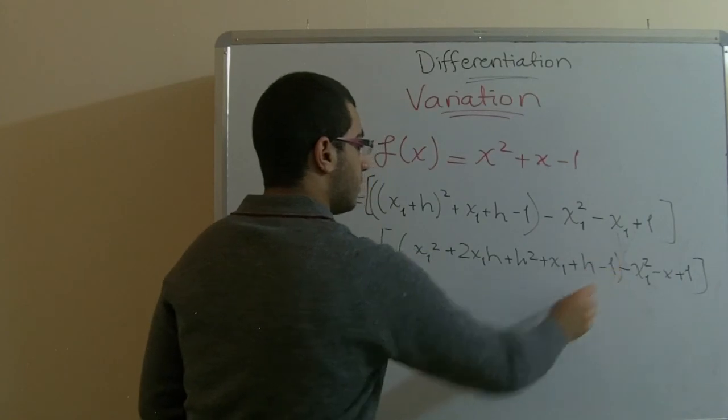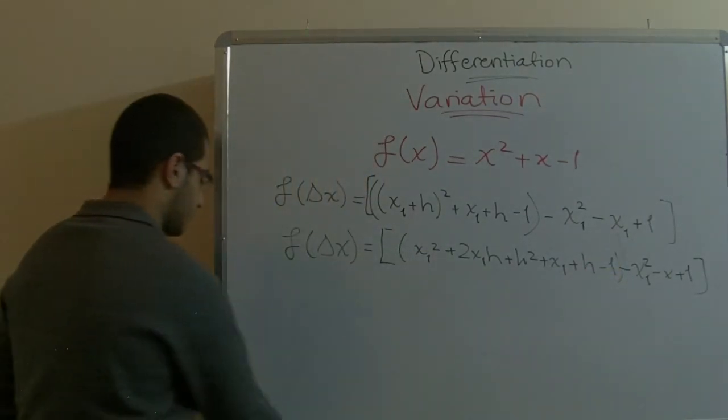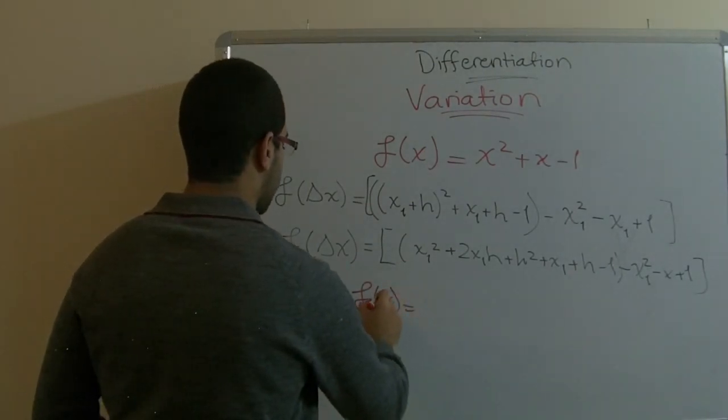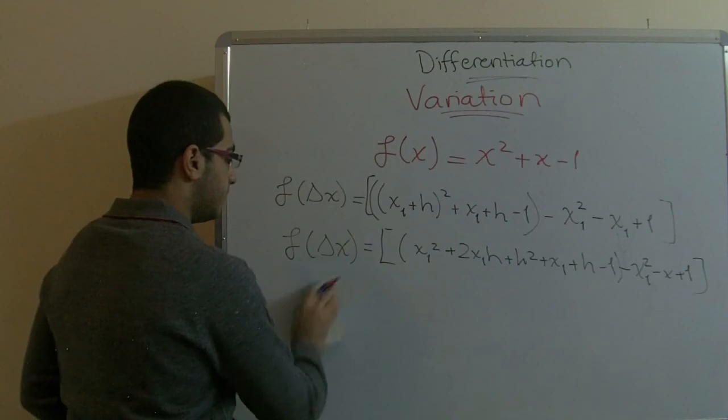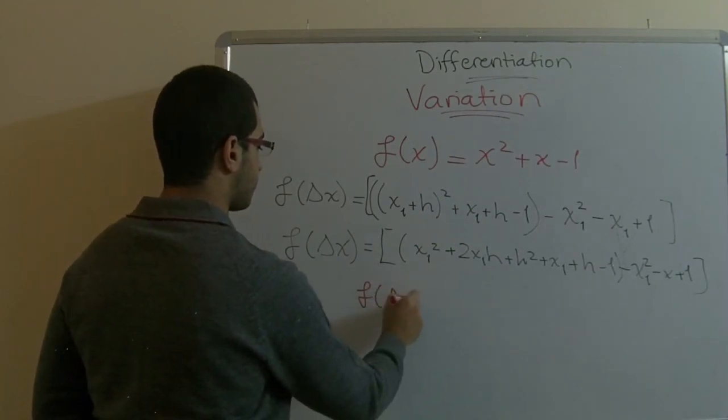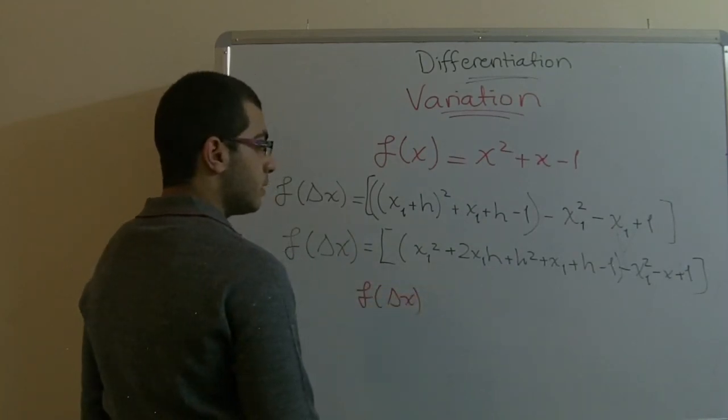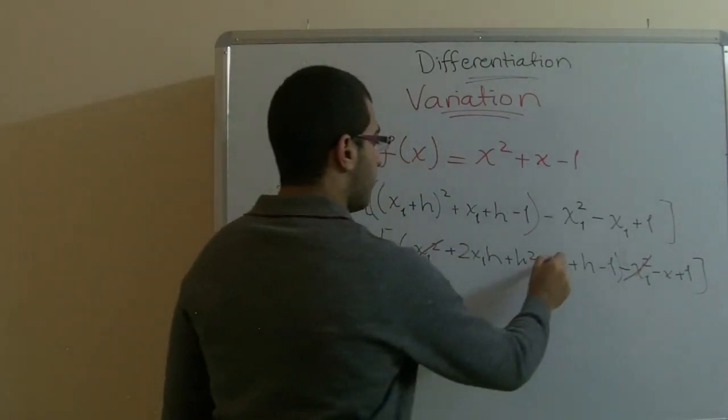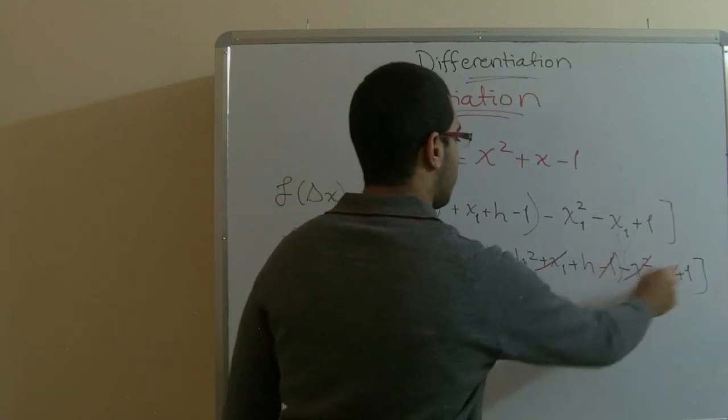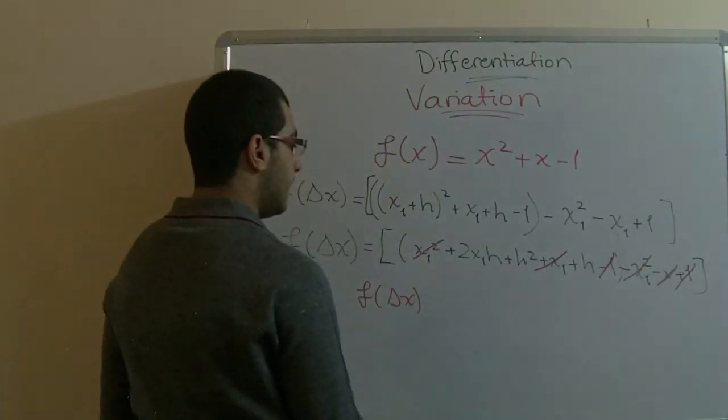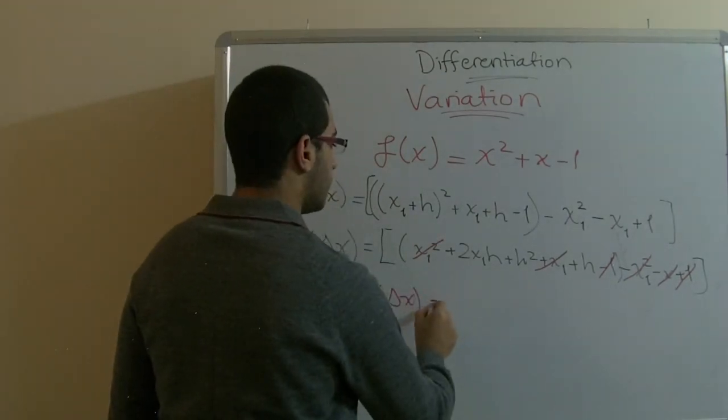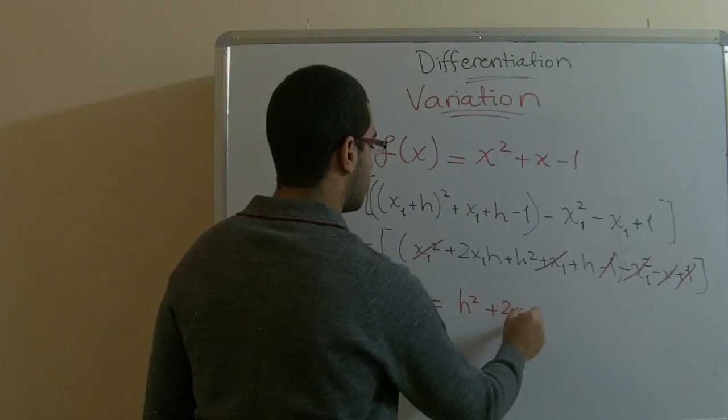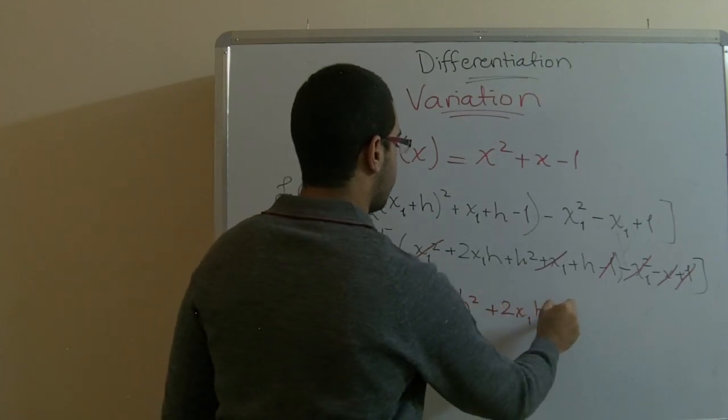Here we have our bracket. We'll have a lot of terms cancelled here. This one will go with this one. We have also this one will go with this one. The negative one with the 1. And the remainder is only h squared plus 2 x1 h plus h.